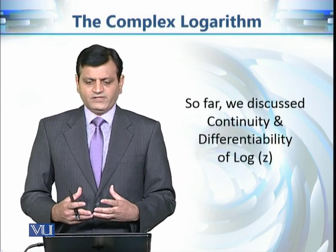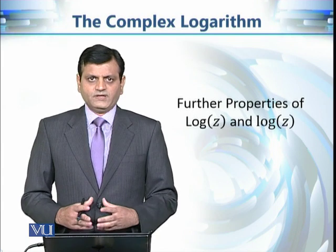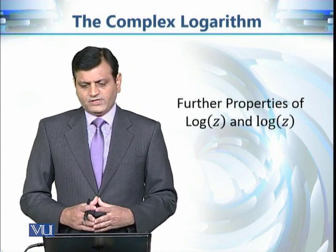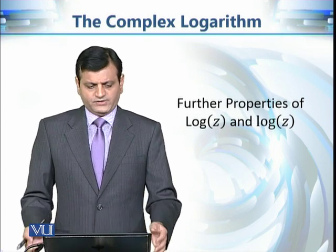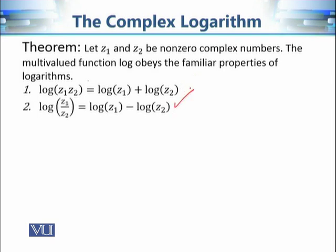So far we have discussed the continuity and differentiability of the principal value of the logarithm. Now we are going to extend our knowledge of its properties. One important property from real analysis is that log(z1·z2) = log(z1) + log(z2), and also log(z1/z2) = log(z1) − log(z2). We are curious whether these properties hold in the case of complex numbers. Fortunately, they do hold.